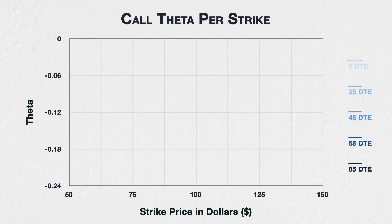Theta is a measure of how much value an option is expected to lose as time passes. The total amount of time left until expiration, or days to expiry, will itself have an effect on the rate at which an option's value will decay.